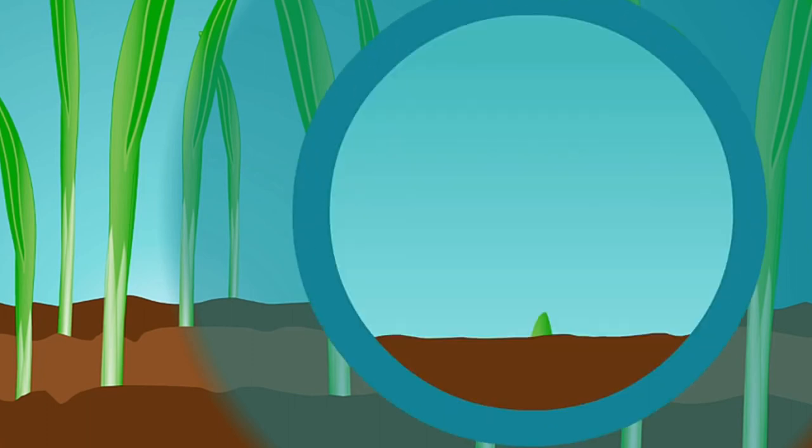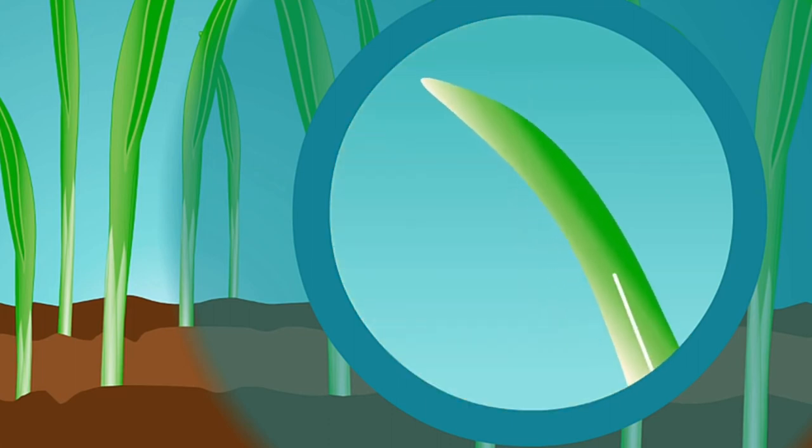When the glass plate was inserted below the tip, auxin moved across to establish a hormone gradient. When the tip was examined, 70% of auxin was found on the shaded side.